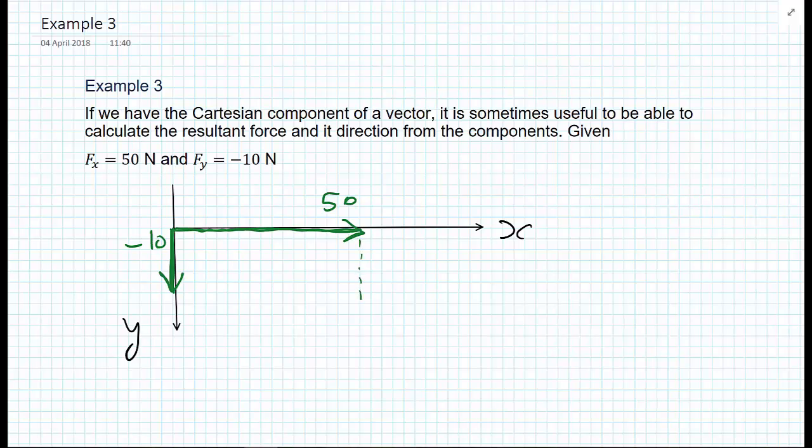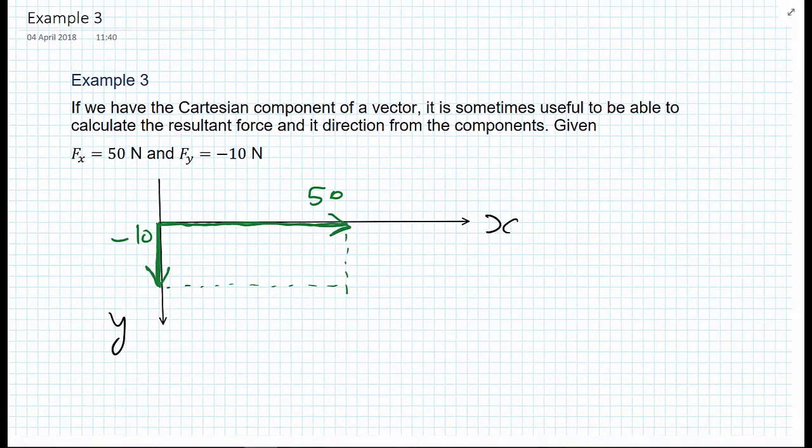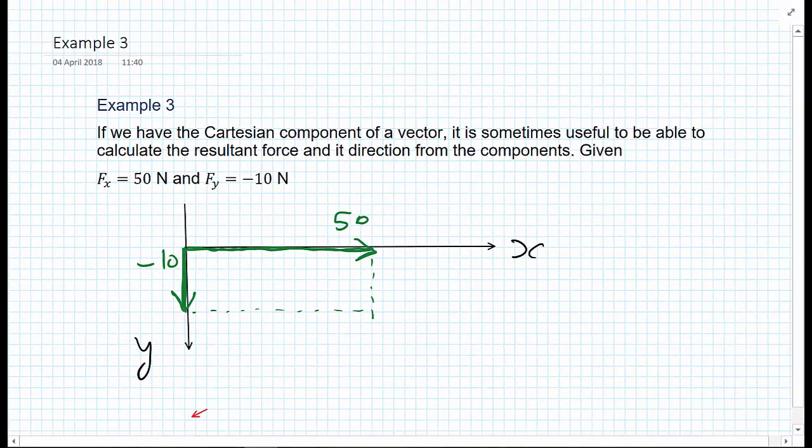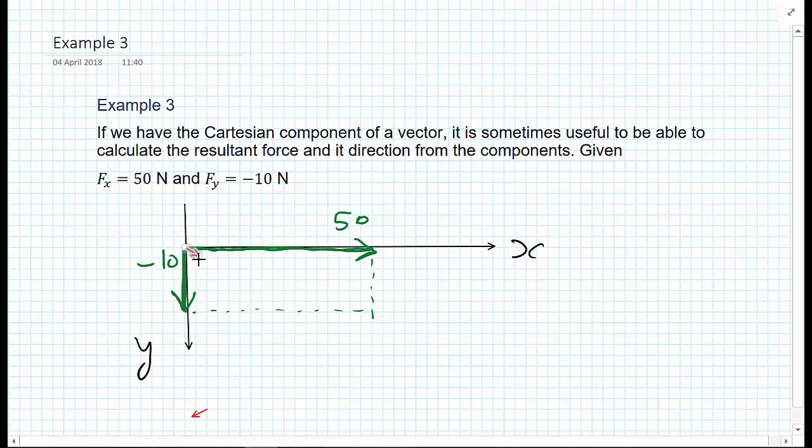Using dotted lines, we imagine where the resultant force would get to, and we draw a straight line from all the way to the point there. This would be our resultant vector, which we're going to call Fr.